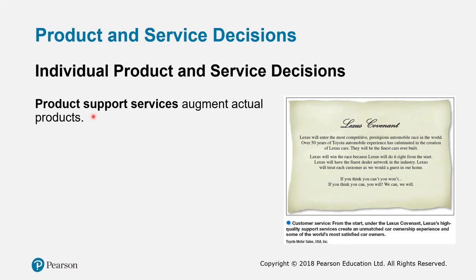Lastly in product decisions, you create product support services — remember the augmented product — which include a warranty letter or warranty card. When you buy a product, you can get after-sale support or services if you have problems. It could also be an assurance letter or card to confirm that you've made a good decision and to assure you of the brand quality or product quality that the company promises.